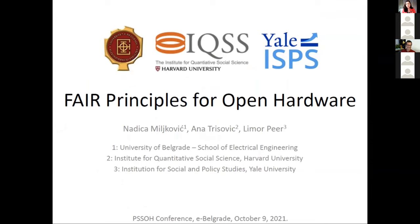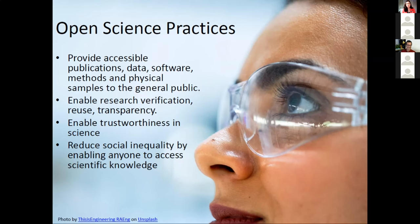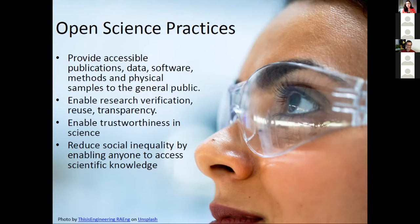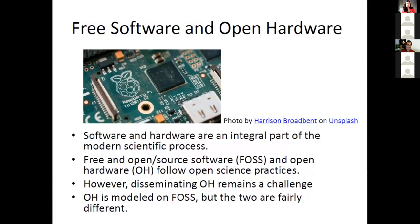We examined FAIR principles for open hardware in terms of open science. Open science provides accessible publications, data, software, methods, and even physical samples to the general public, not just scientists. It enables research verification, reuse, and transparency, which are highly important, and by that it enables trustworthiness in science. We can even argue that open science practices reduce social inequality by enabling anyone to access scientific knowledge. In terms of software and hardware, they've been an integral part of the modern scientific process, and free software and open hardware naturally follow open science practices.